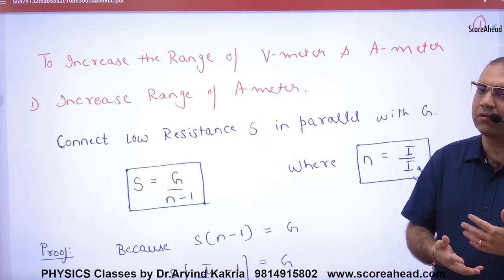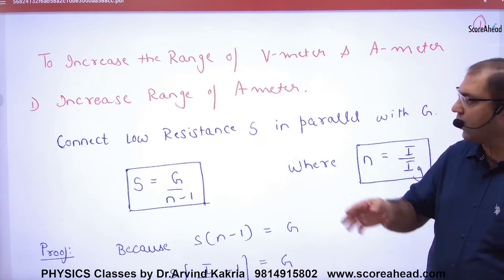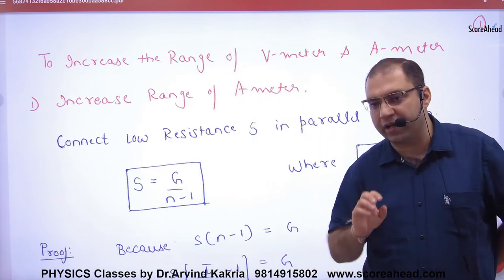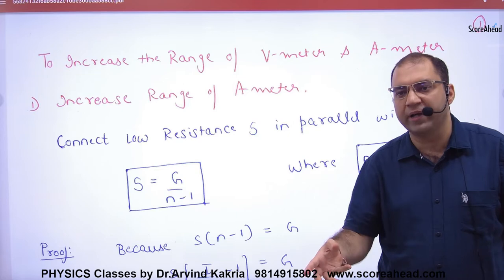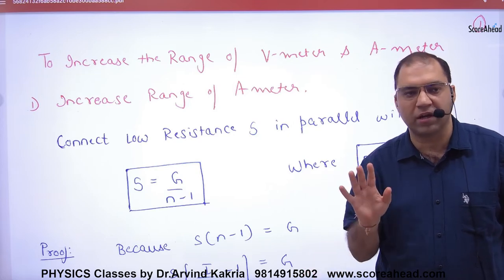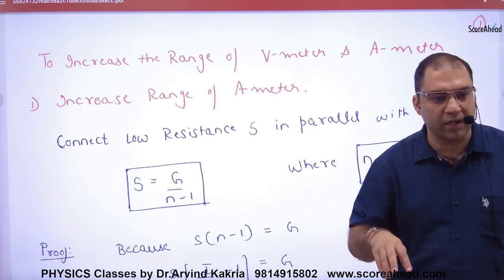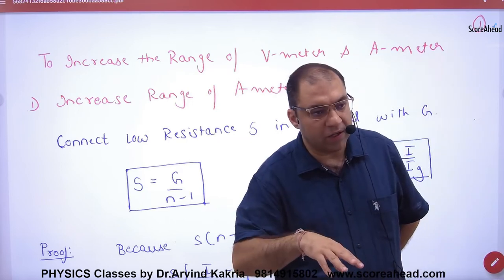Some places are written like this: if you want to increase the range of ammeter, it means you have a galvanometer with current I_G and you have to make an ammeter. That means you have to increase the range to I. So what do you have to do?